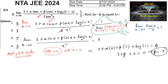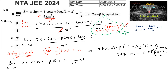Now let us apply L'Hôpital's rule. Taking the derivative of the numerator: limit x tends to 0 of [α·cos(x) - β·sin(x) + (1/(1 - x))·(-1)] / (2x) equals 1.